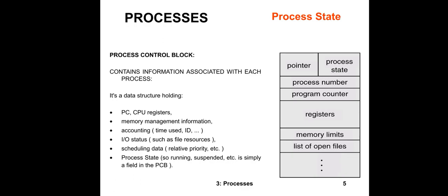The next is process state, which is the most important factor of the process control block. The process control block maintains all the records of the process states — when the process is in which state. For example, if your process is in the new state, the process control block can show that information.